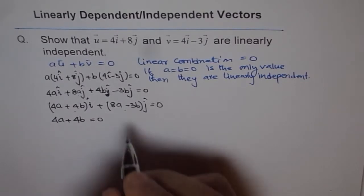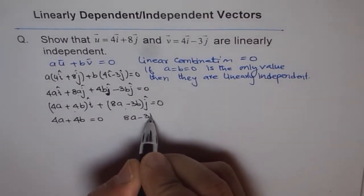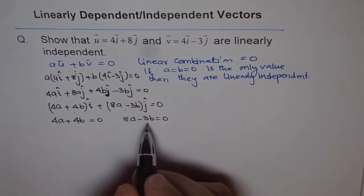And then the other one is 8a minus 3b equals 0. So we get two different equations, and we have two variables here. So now we can solve for a variable.